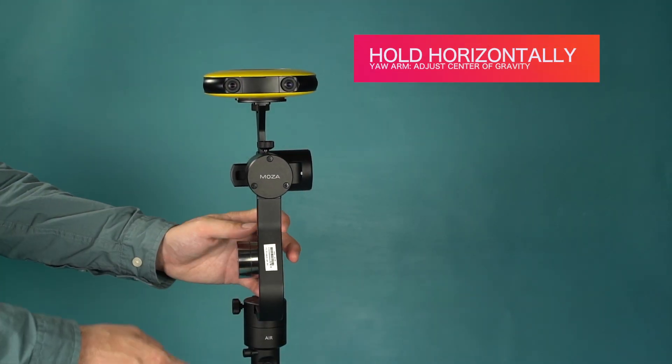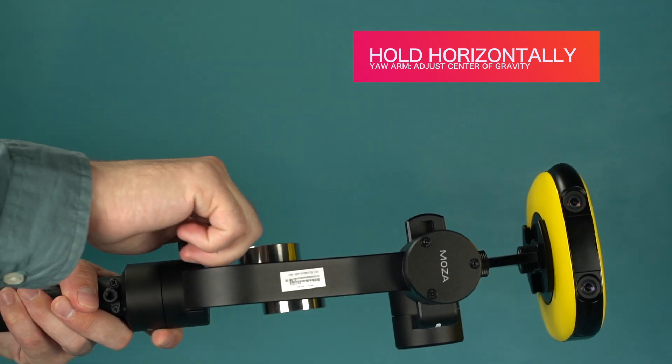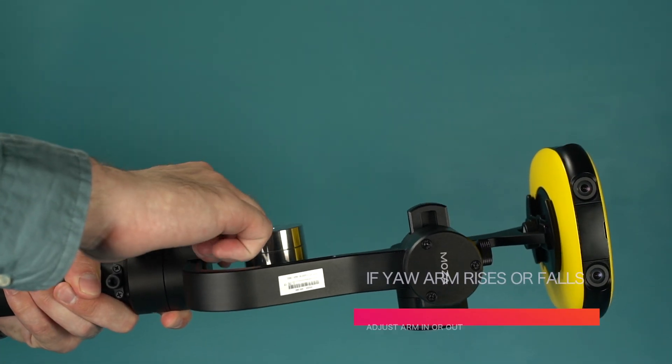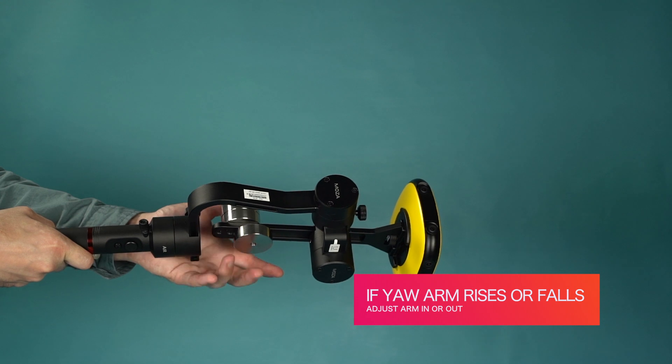The last adjustment is yaw. To test the center of gravity, hold the stabilizer horizontally and watch the yaw arm. If the yaw arm rises or falls, it will need to be adjusted in or out.